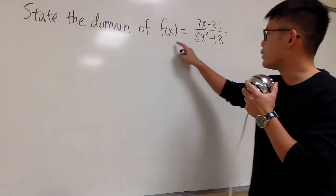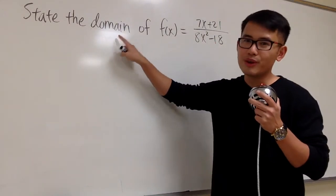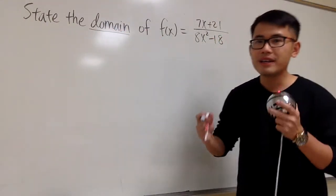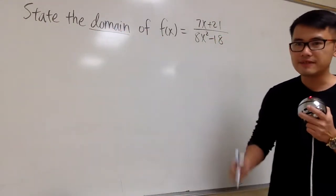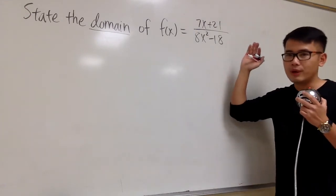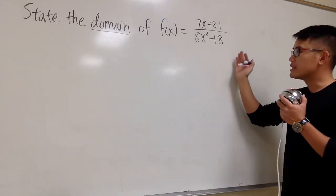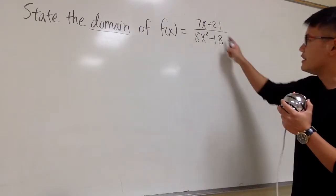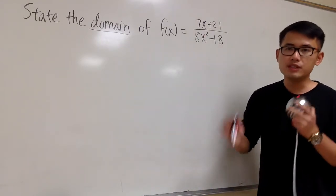Okay, we'll be finding the domain for this rational function, and of course, we'll have to talk about what does the word domain mean. This means we are going to find the set of all the possible x values that we can plug into the function right here. And as we can see, when we have a rational function, we have to make sure that the denominator cannot be zero.